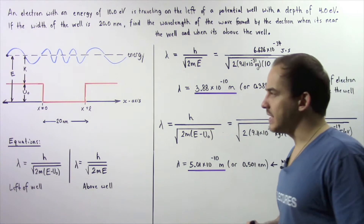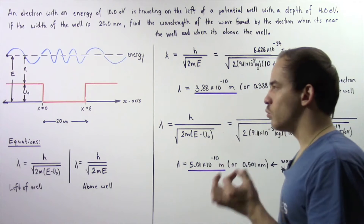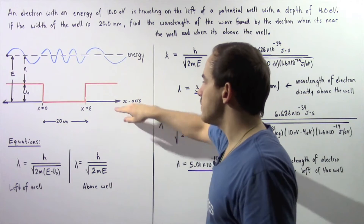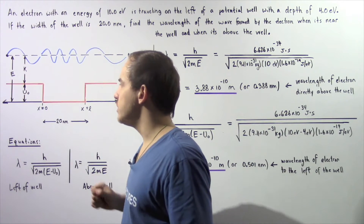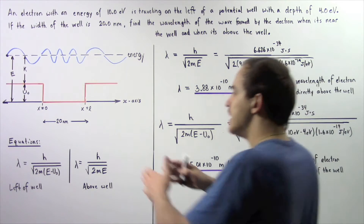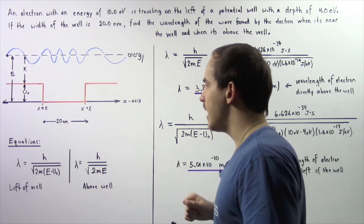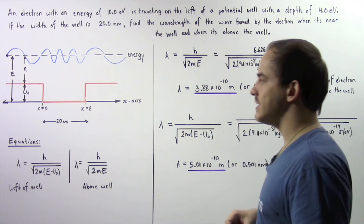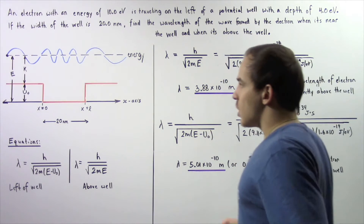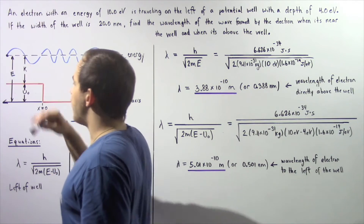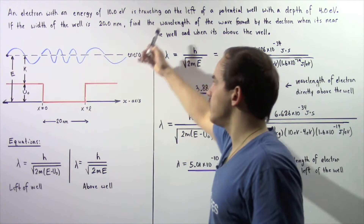To see exactly what's taking place, let's look at the following diagram. This section is our potential well, and the height of the potential well — the distance from the x-axis to the top portion — is given by U₀, which is equal to 4 electron volts. The width of our potential well, from x equals 0 to x equals L, is given by 20 nanometers. Our electron begins at a position traveling with some kinetic energy across the following energy level.